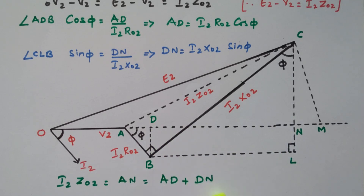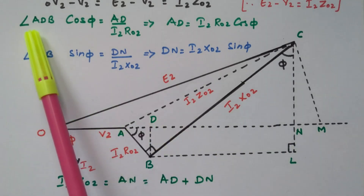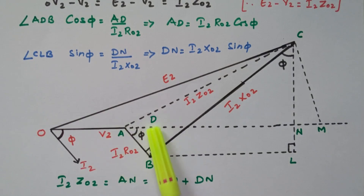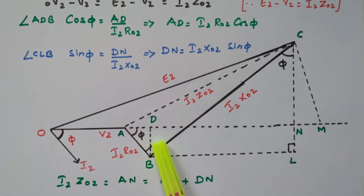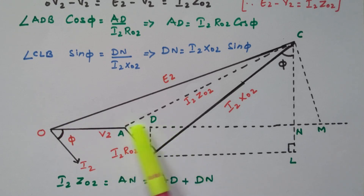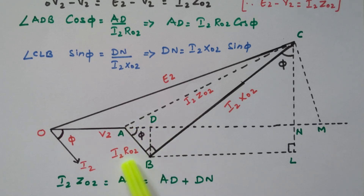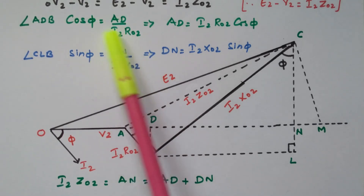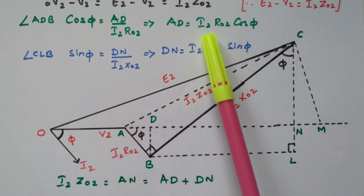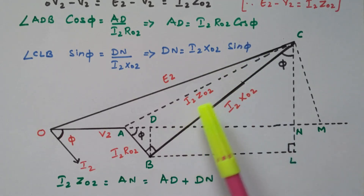From triangle ADB, cos φ equals adjacent side over hypotenuse. The adjacent side is Ad and the hypotenuse is I2·R02. So Ad equals I2·R02·cos φ. That gives us the expression for Ad.